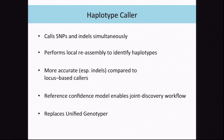GATK's recommended variant caller is the HaplotypeCaller. It replaces UnifiedGenotyper, which was our original variant caller. UnifiedGenotyper was a locus-based caller, but it turns out that HaplotypeCaller, which is a local reassembly algorithm, is a lot more accurate compared to locus-based callers.